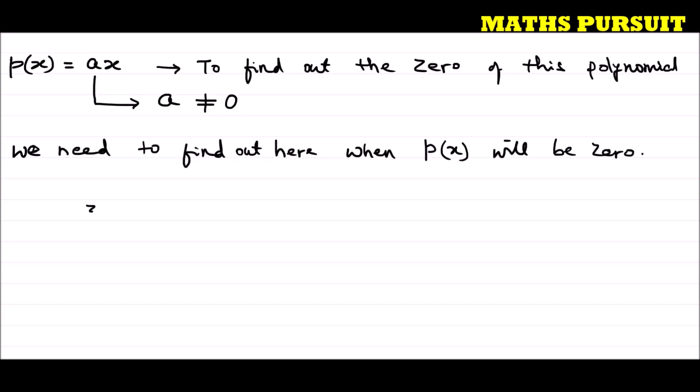That is we can say p(x) is equal to zero. That means or in other words we can say when ax is equal to zero. Why? Because p(x) is equal to ax. So we can say when ax will be zero. Or I can write ax is equal to zero upon a.